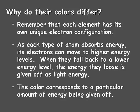This takes us back to what we've been studying in sections 1 and 2 of this chapter. Remember that each element has its own unique electron configuration. As each type of atom absorbs energy, its electrons can move to higher energy levels. However, when they fall back to a lower energy level, the energy that they lose gets given off as light energy. The color given off as an electron falls back corresponds to a particular amount of energy that is given off.